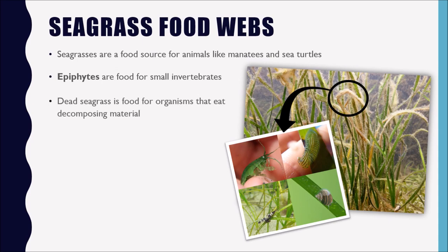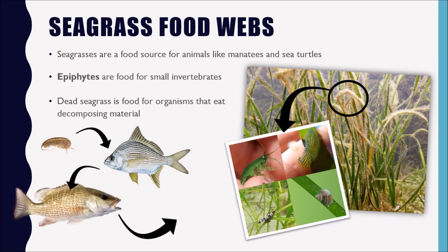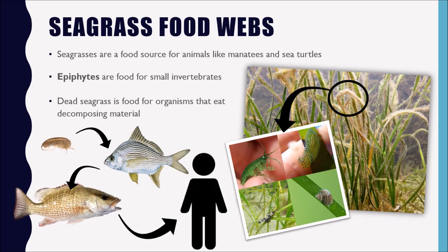Dead seagrass can also be food for organisms that eat decomposing material. Because seagrass beds are nursery habitats, there may be very small animals in that habitat, and then a larger organism might feed on those small animals, and in turn there may be larger predators — like sharks, dolphins, or larger fish — that prey on those smaller animals. We might even be part of that food web ourselves, eating larger fish that have fed on organisms in the seagrass beds or spent part of their lives there.